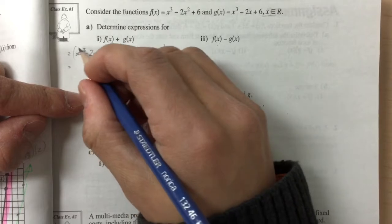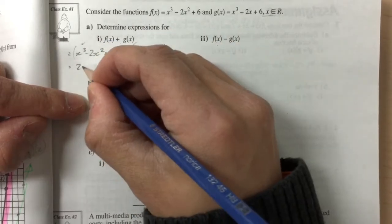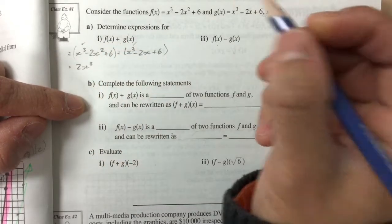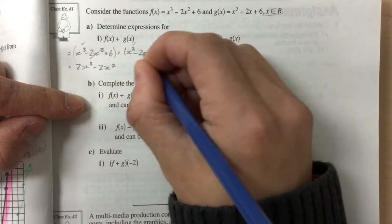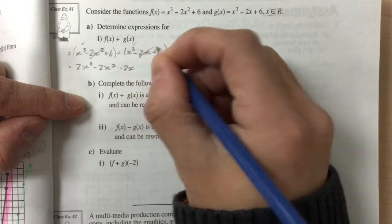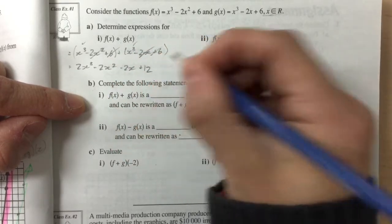And upon simplification, I get x cubed and x cubed, which is 2x cubed. I have negative 2x squared, which is negative 2x squared. I have negative 2x, and I have positive 6 and positive 6 for positive 12.